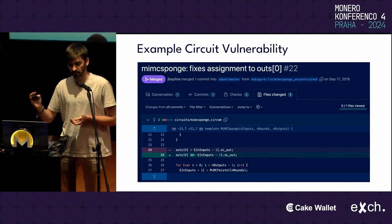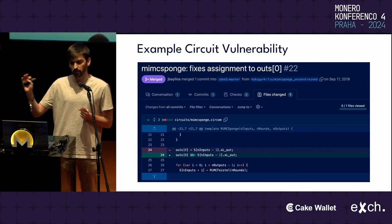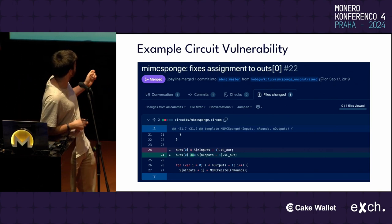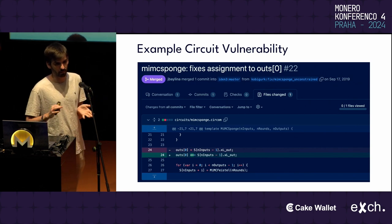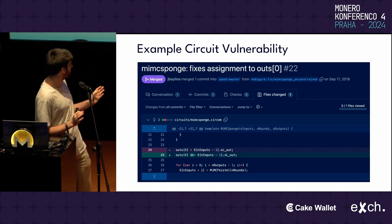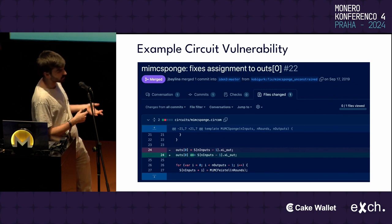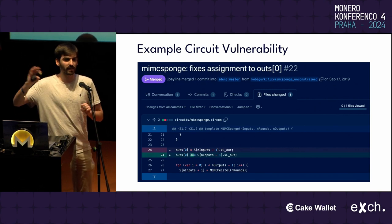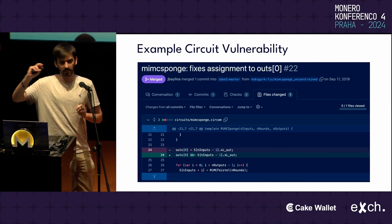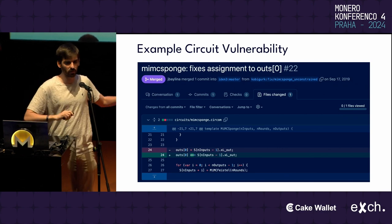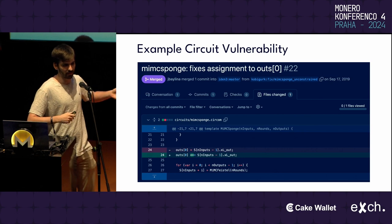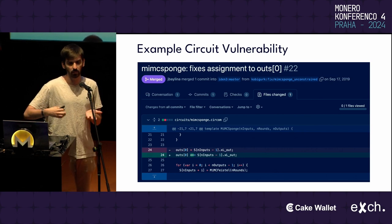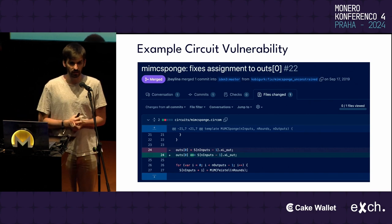For example, the TornadoCash vulnerability was due to an issue in one of the underlying libraries. Here is basically the program that was vulnerable — the issue is in line 24, where instead of using a symbol that means assign a value and constrain, it only assigned that value. That resulted in a vulnerability that, if exploited, would have allowed someone to get all the money out of TornadoCash.